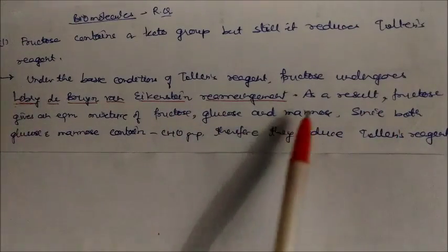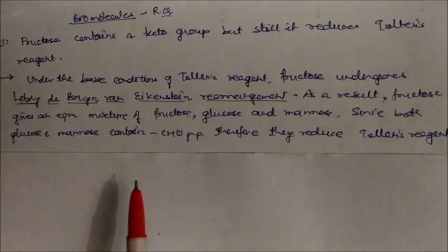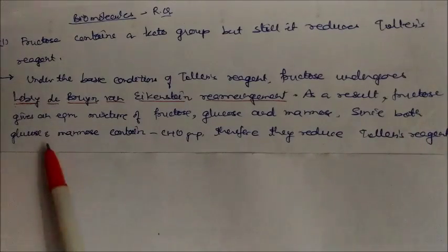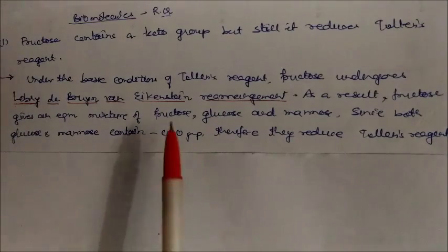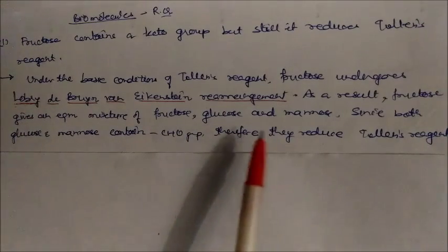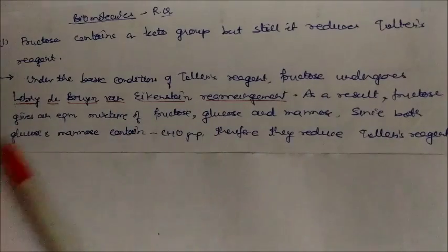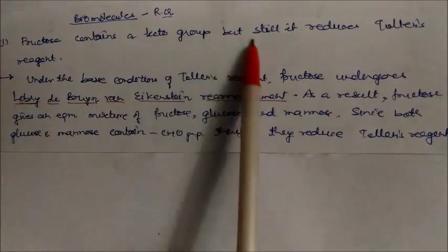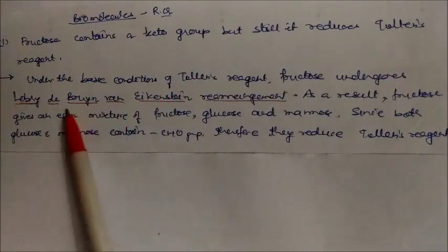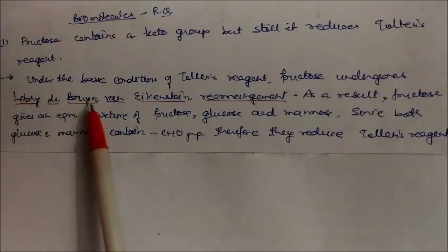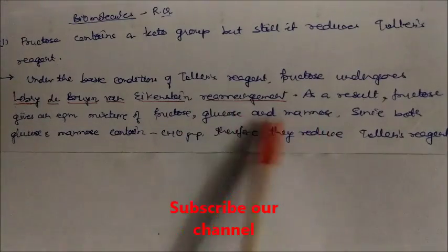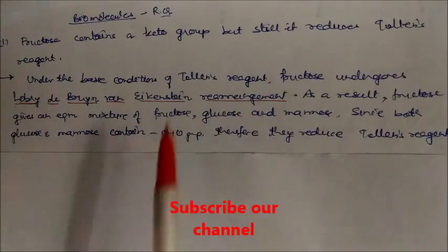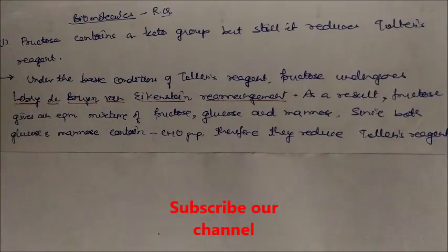Even if some fructose is left behind, glucose and mannitol are the additional products formed. Since both glucose and mannitol contain aldehyde groups, these aldehyde groups are reduced by Tollens' reagent. That's why fructose — despite containing a keto group — still reduces Tollens' reagent, because it produces glucose and mannitol via the Lobry de Bruyn–van Ekenstein rearrangement.